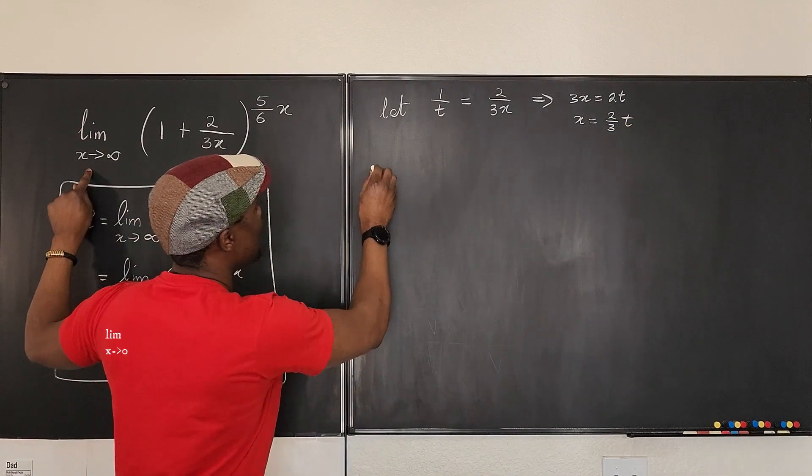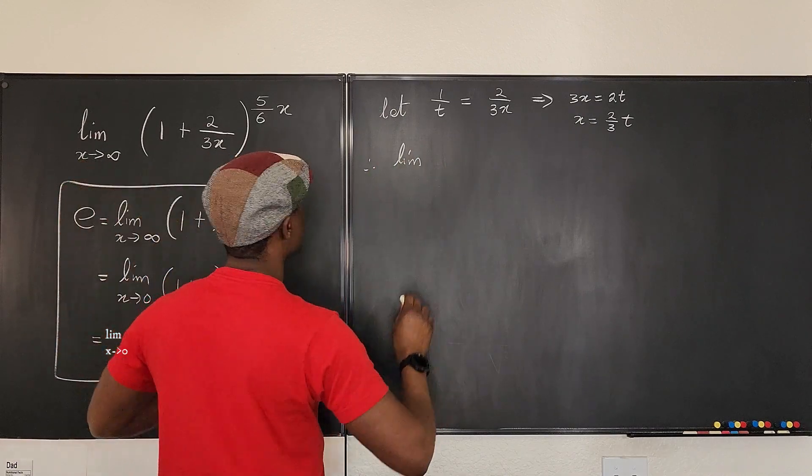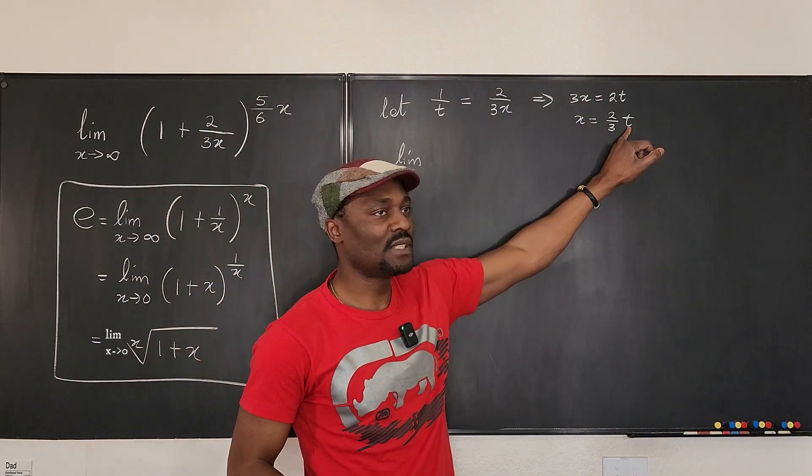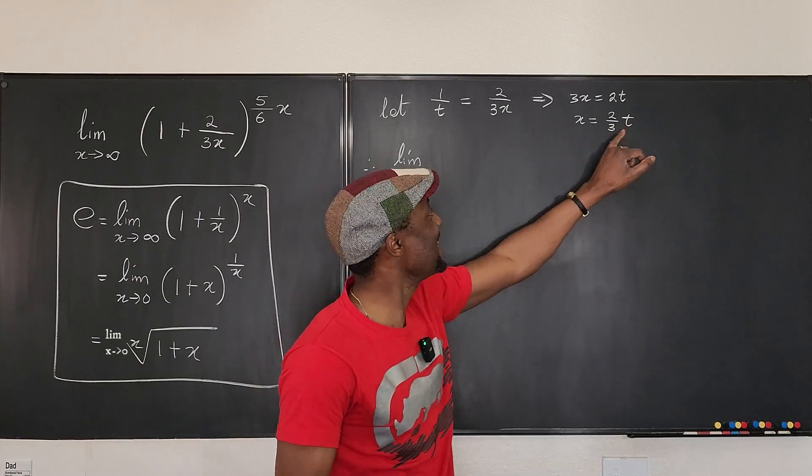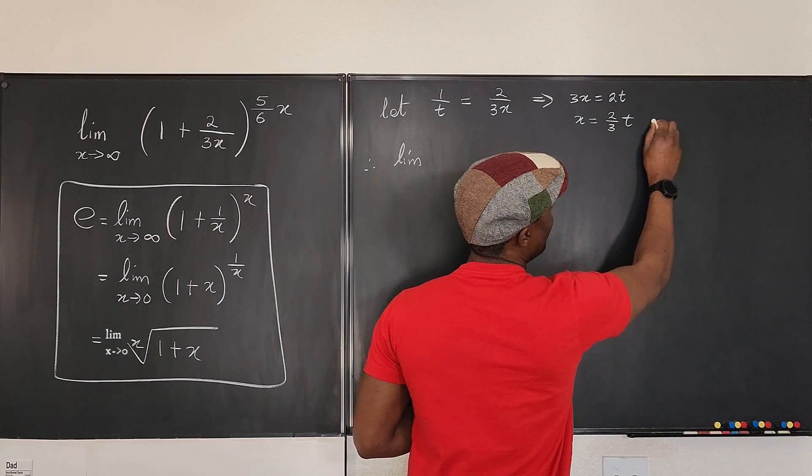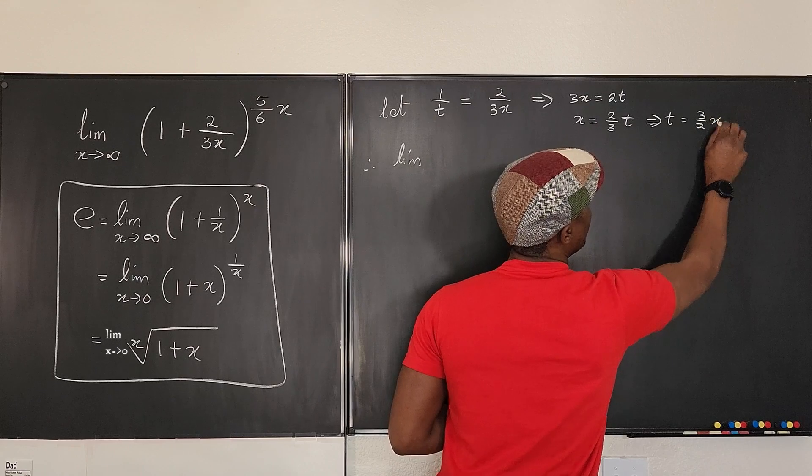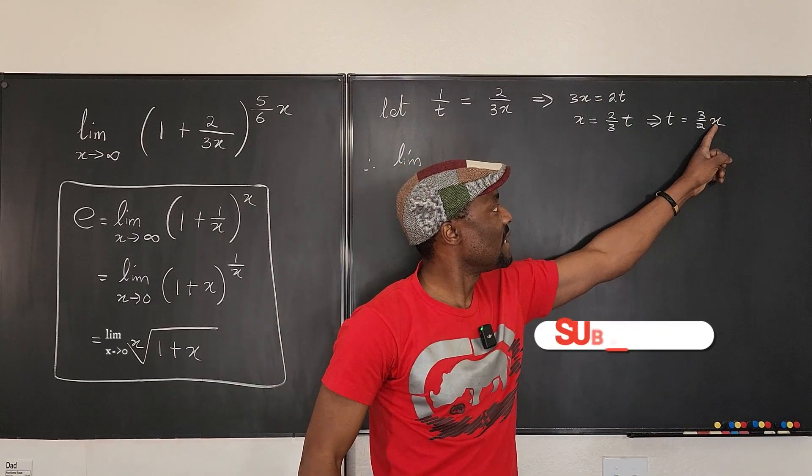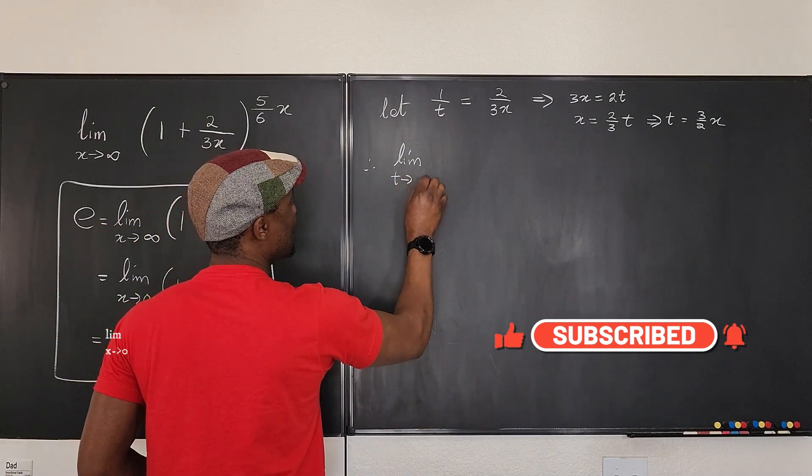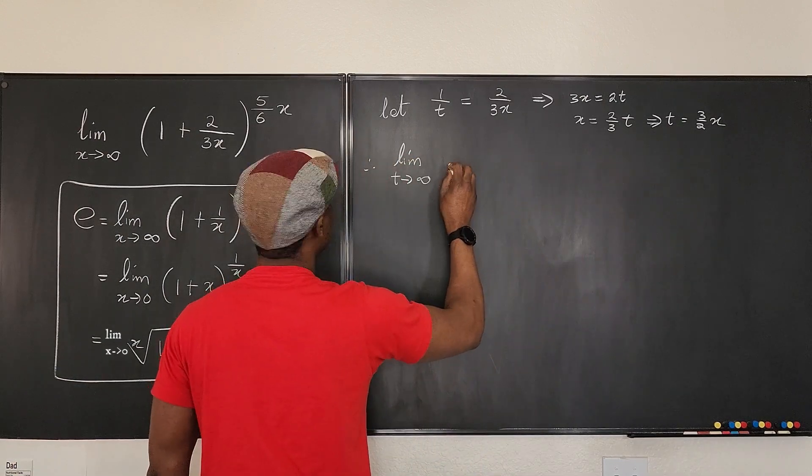So we're going to go here and say, therefore, we have the limit as x goes to infinity. But what happens as x goes to infinity, where does t go? So definitely, t also goes to infinity because if you look at this, or we can say also t, which implies t equals 3 over 2x. So as you see, as x goes to infinity, this also goes to infinity. So we can rewrite this expression as t goes to infinity. Because x goes to infinity, t also goes to infinity.